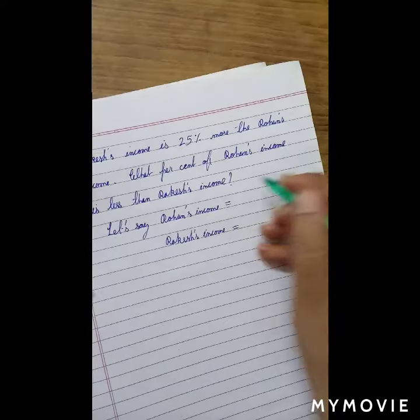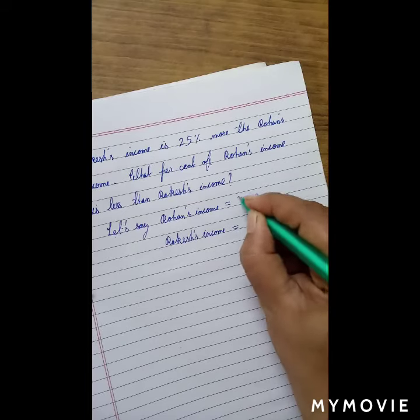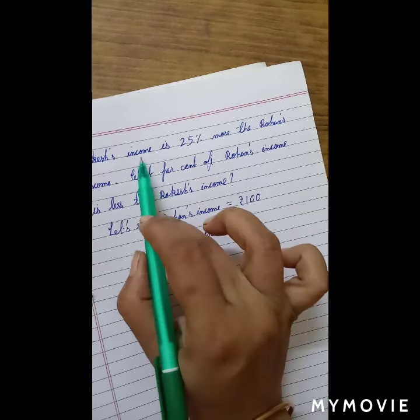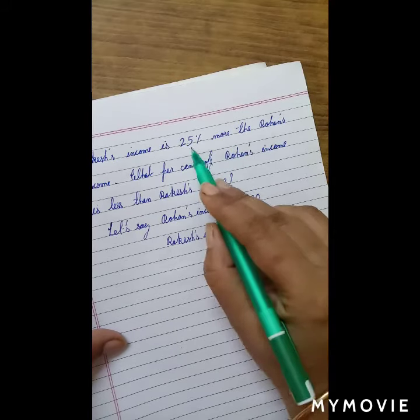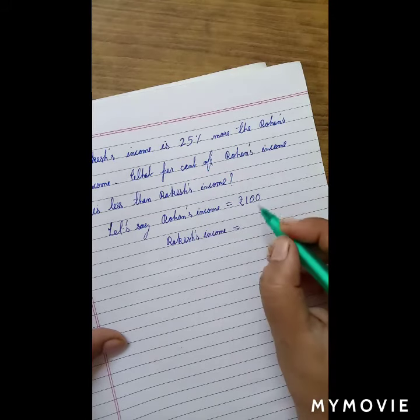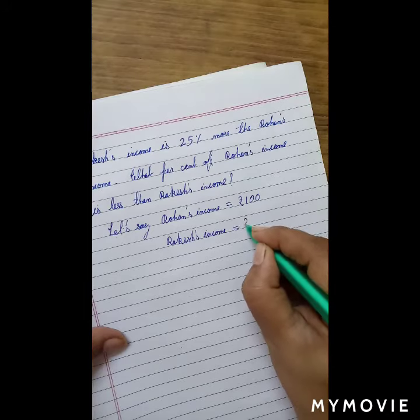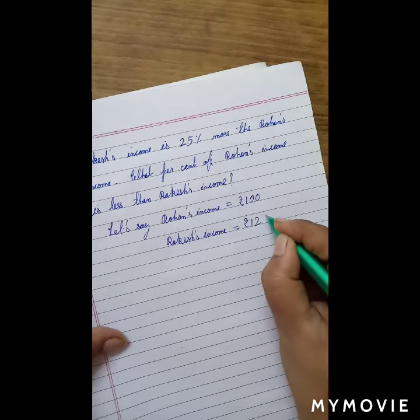So let's say Rohan's income is Rs.100 and Rakesh's income is 25% more than Rohan's income. So it's going to be Rs.125.